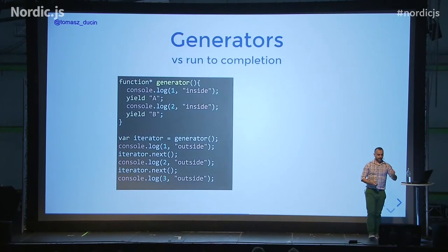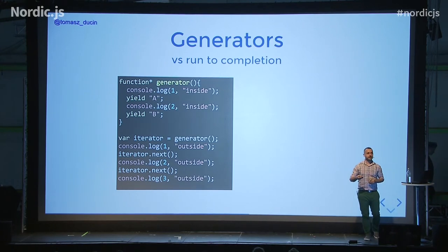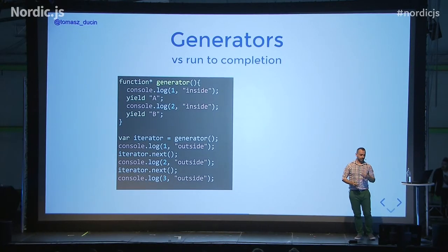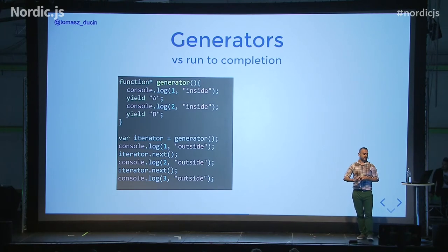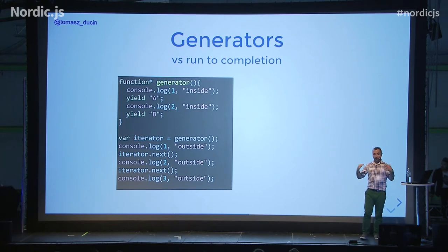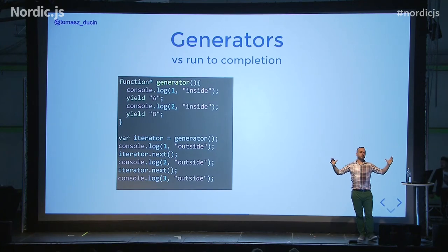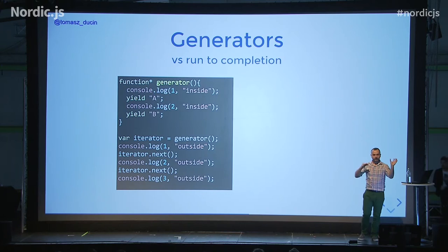Now we want to combine promises with generators. A generator is a new type of function in ES6 that can suspend and resume — it can fall asleep and wake up to continue its code. An ordinary function must run to completion, but a generator can yield a value, go to sleep, and when asked for the next value, wake up, do some code, yield the next value, and go back to sleep. We create an instance of a generator and assign it to an iterator, which is lazy by nature — instead of processing a whole big array, we do only the one step we need.